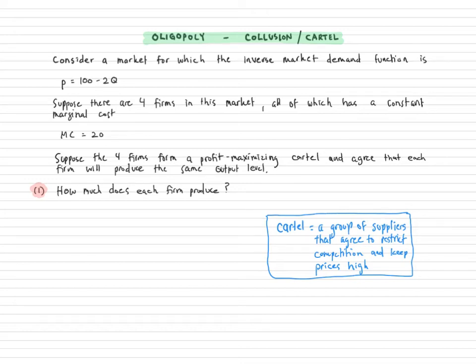Hello, in this video I want to talk about cartels. Cartels occur in the market structure oligopoly when firms collude and act like a monopoly.